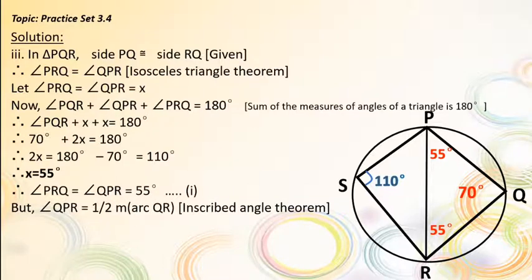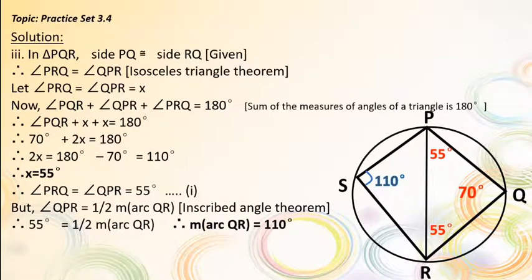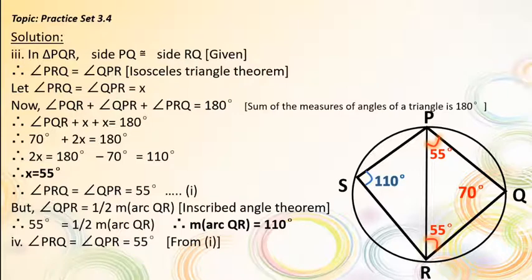But angle QPR = half of measure of arc QR, by the inscribed angle theorem. Therefore, 55° = half of measure of arc QR. Therefore, measure of arc QR = 110°. Fourth, from the above result, measure of angle PRQ = 55°.